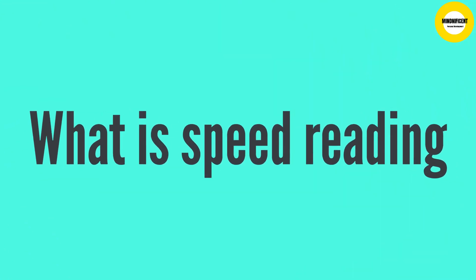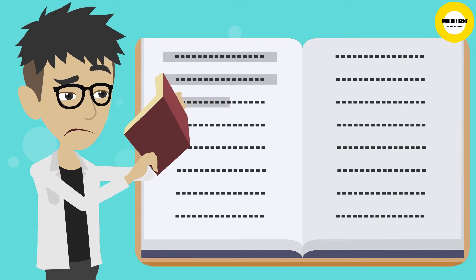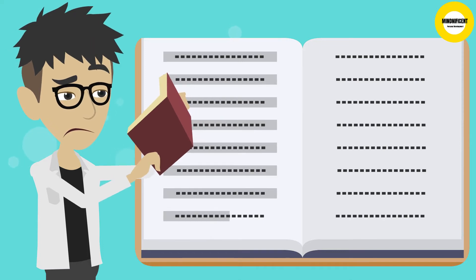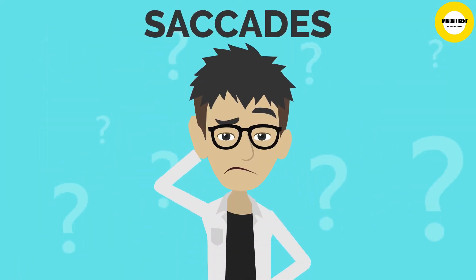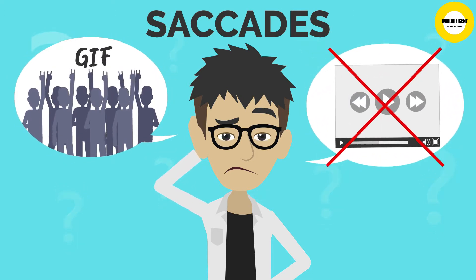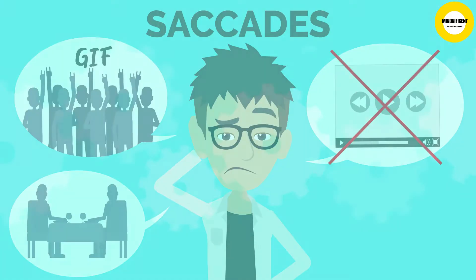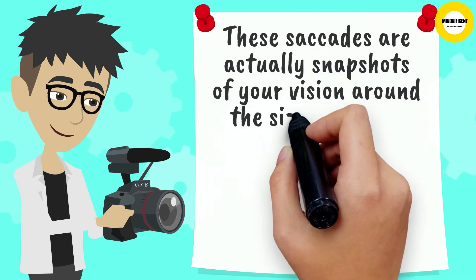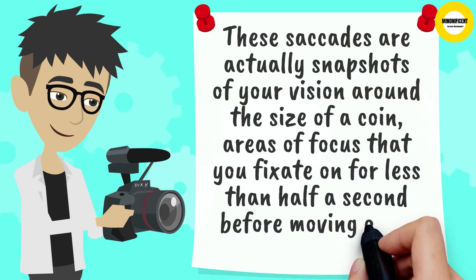What is speed reading? The written word is a funny thing. Most people think they read in a straight line, and once they get to the end, stop, move their eyes down and to the left and begin a new line. Well, you don't. It's a series of movements or jumps called saccades. Think of them as a GIF or moving picture. It's not a real video, but a series of still images in a sequence that gives the impression that you're looking at true motion, only your brain fills in the gaps. These saccades are actually snapshots of your vision around the size of a coin, areas of focus that you fixate on for less than half a second before moving on to the next one.